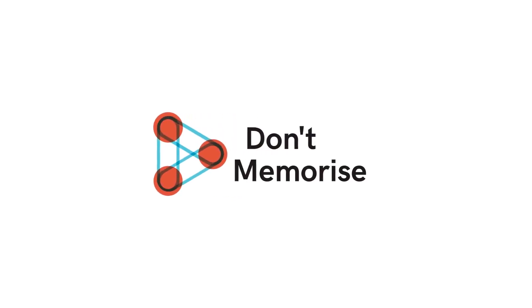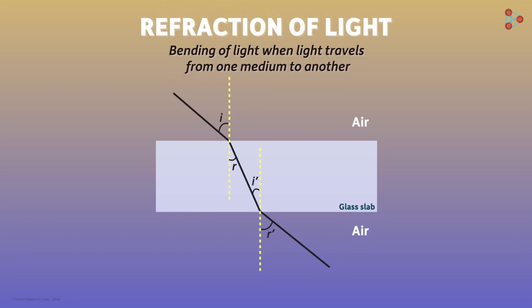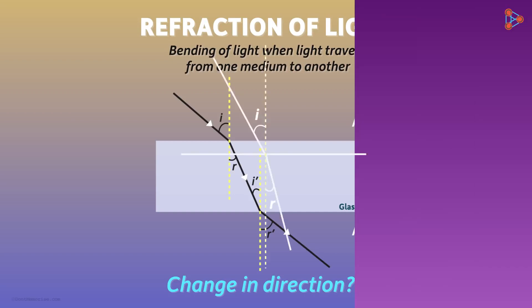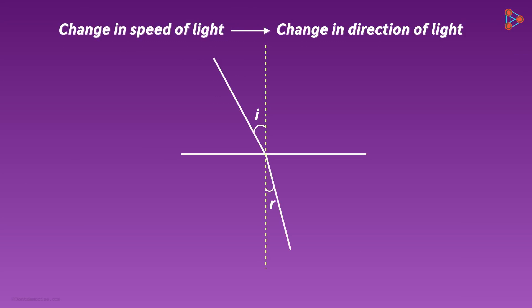Hello friends, I am Rupinder, PGT Physics. I will be continuing with refraction of light. In the last video, I covered what refraction of light is and how bending takes place. In this video, you can see the glass slab and the air interface. The bending of light occurs when light travels from air to glass and glass to air. In the diagram, bending occurs two times.